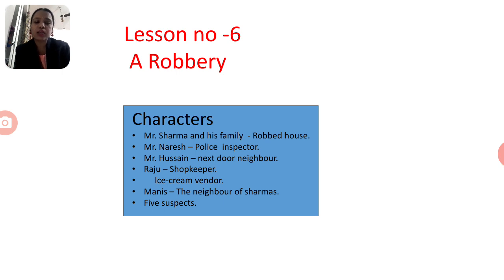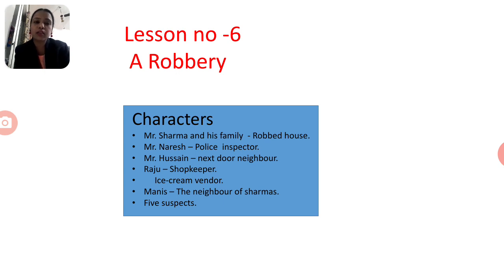Before I start explaining this lesson, I will first introduce the characters, because characters are very important in the story. Whenever you read any story, you must know the characters. The first character is Mr. Sharma and his family, whose house had been robbed. The second character is Mr. Naresh, the police inspector.